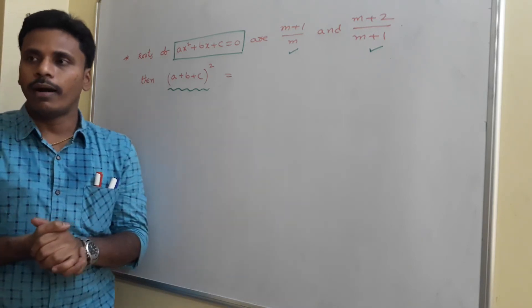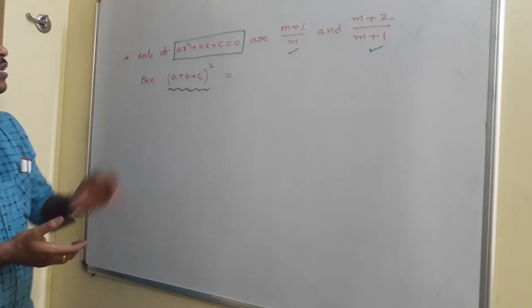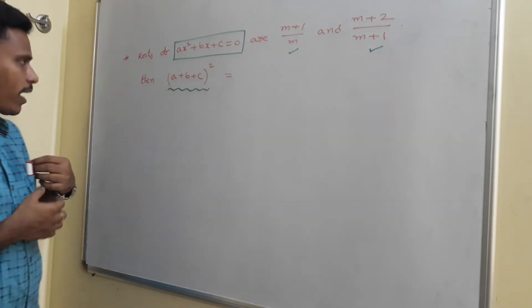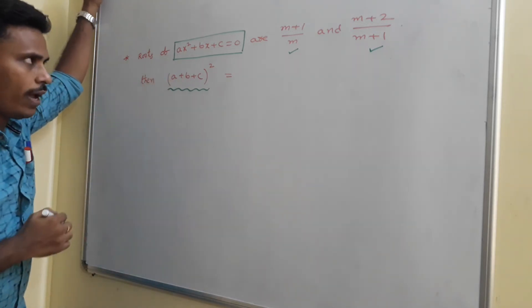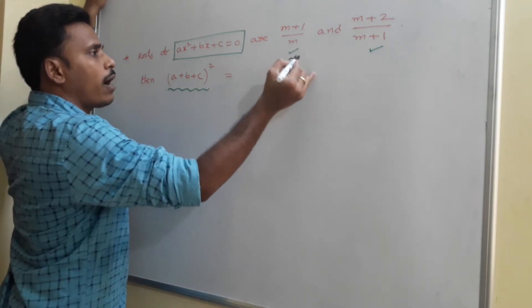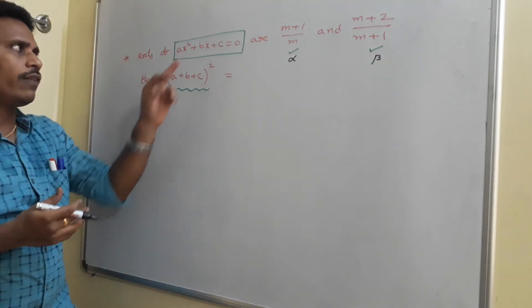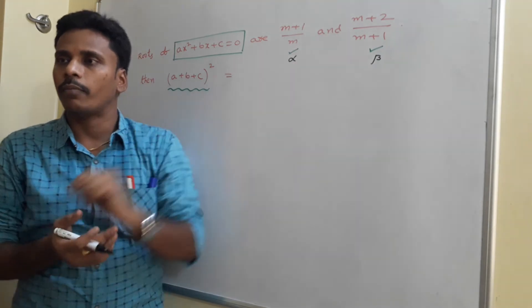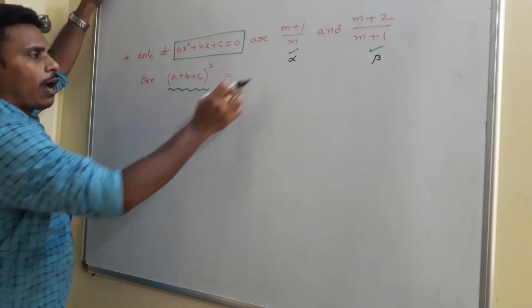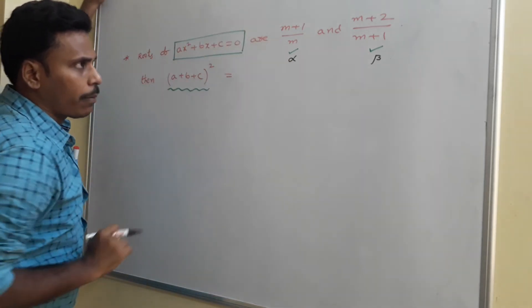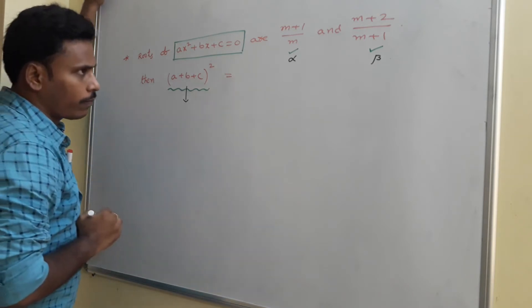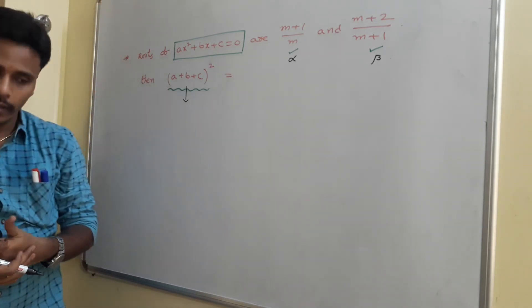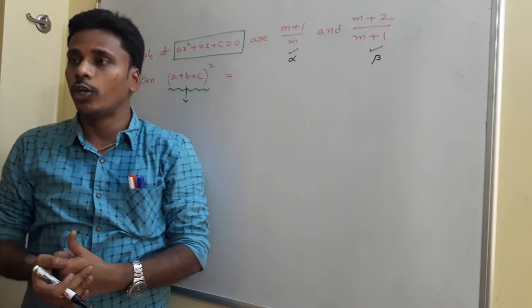Let alpha = (m+1)/m and beta = (m+2)/(m+1). Since alpha and beta are roots of ax²+bx+c=0, we know alpha+beta = minus b/a and alpha·beta = c/a. To find (a+b+c)², factor out a²: a²(1 + b/a + c/a)² = a²(1 minus alpha minus beta + alpha·beta)².